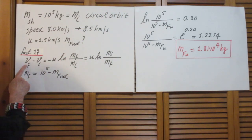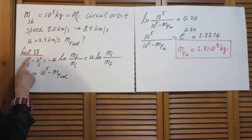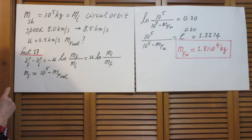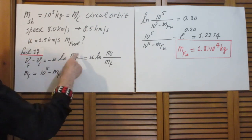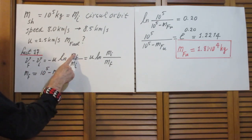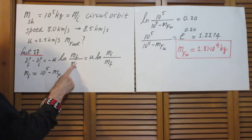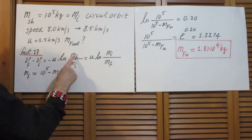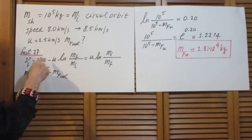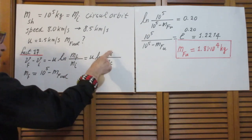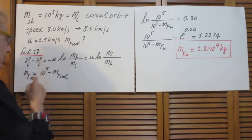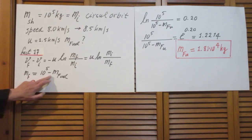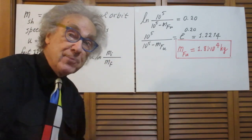So the final speed of our shuttle, which is 8.5 kilometers per second minus the initial speed, which was 8.0 kilometers per second, is minus this U times the natural logarithm of the ratio of the final mass of the shuttle divided by the initial mass of the shuttle. The initial mass that included the fuel is 10 to the fifth kilogram. The final mass does not include the fuel. If you want to get rid of the minus sign, you can flip this over, then you get the initial mass divided by the final mass, and then you have here plus U. So the final mass, after the rocket burn of the shuttle, is 10 to the fifth minus the mass of the fuel that has been spewed out.